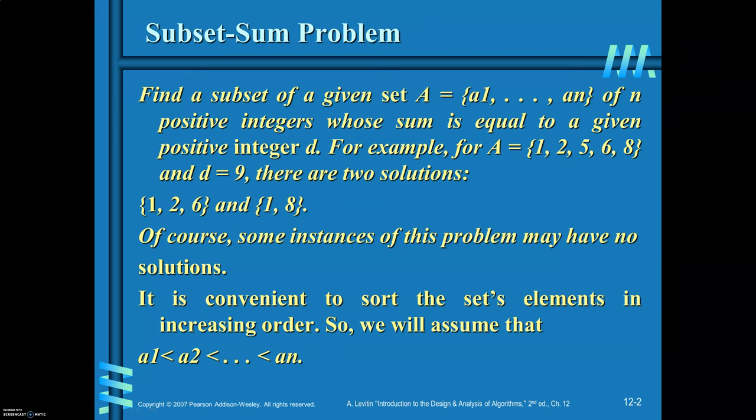Next, we will see how to find subset sum problem. Find a subset of a given set A equal to {a1, a2, ..., an} of n positive integers whose sum is equal to a given positive integer d. For example, you have given a set A with elements 1, 2, 5, 6, 8 and d is 9.